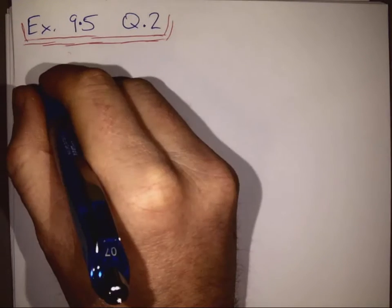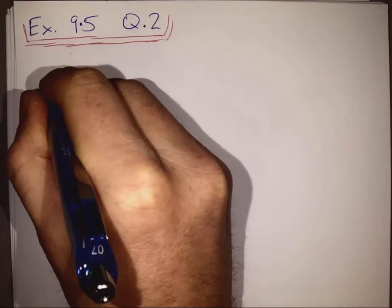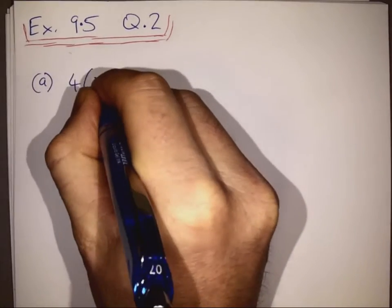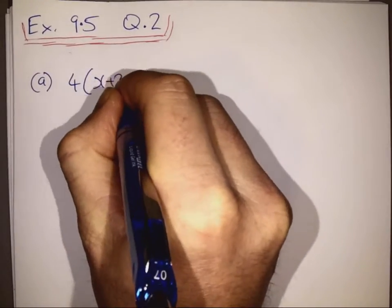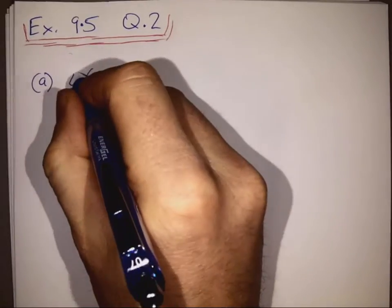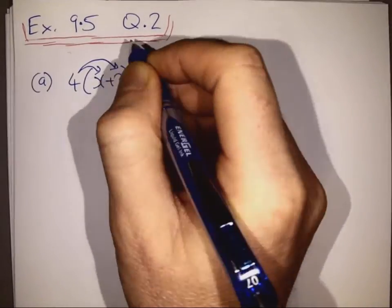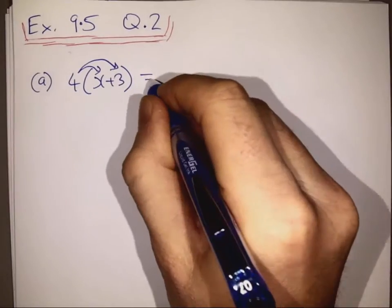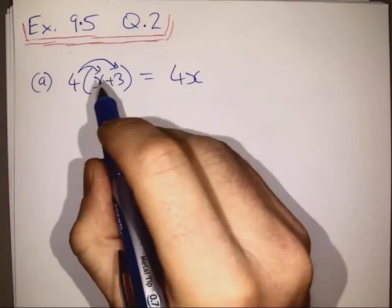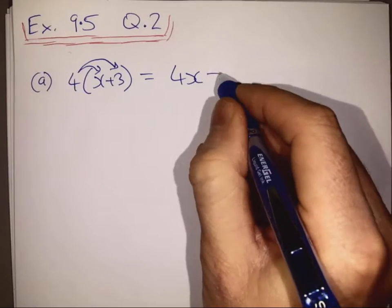Question 2a: 4 times x plus 3. We multiply the 4 by the first item and the 4 by the second item and we add. So that gives us 4x, and 4 times 3 gives us plus 12.